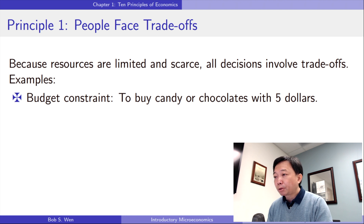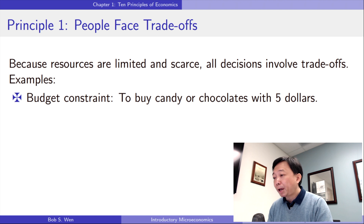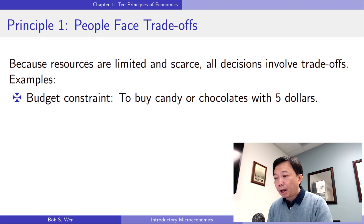So I face trade-offs. If I have $5 today, I will have to consider which brand I should buy, or whether I should buy chocolates today. I may spend that $5 on textbooks. How to spend our money and how to allocate resources is an important issue we deal with every day.